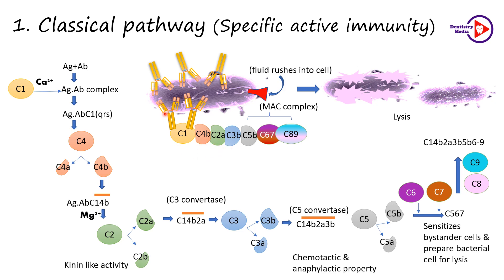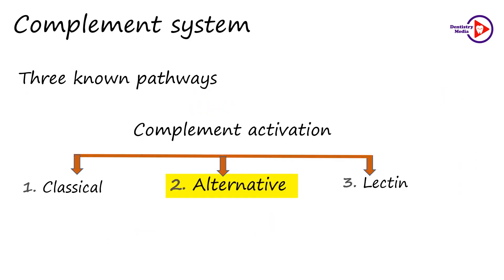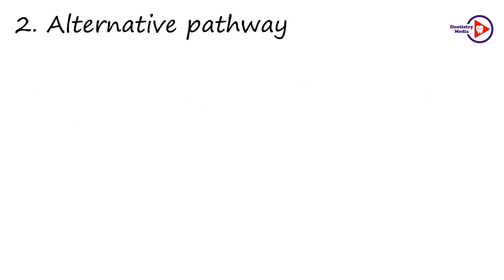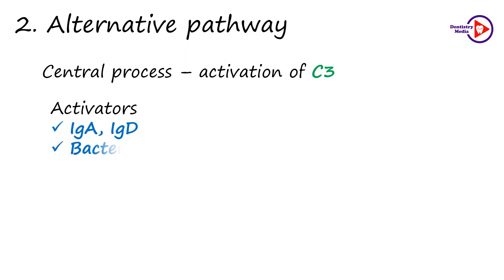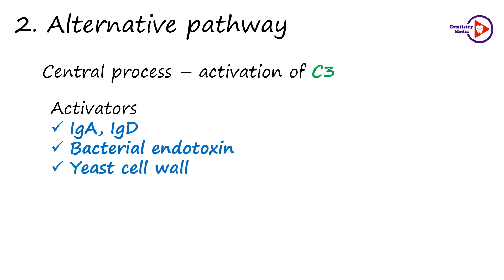These complement proteins, as they are called, complement or complete the action of the antibodies. The alternative pathway contributes to antimicrobial defense without requiring specific antibodies. The central process here is the activation of C3. They can be activated by a wide range of substances including immunoglobulins IgA, IgD, bacterial endotoxin, yeast cell wall, cobra venom factor, and nephritic factor.